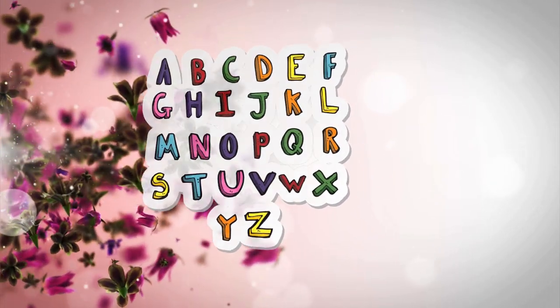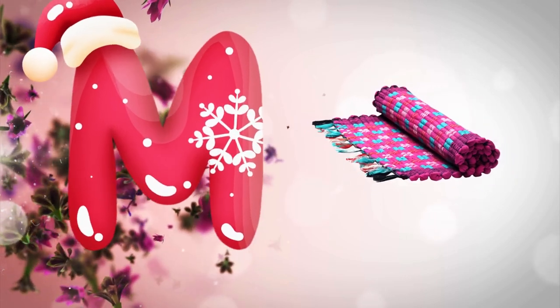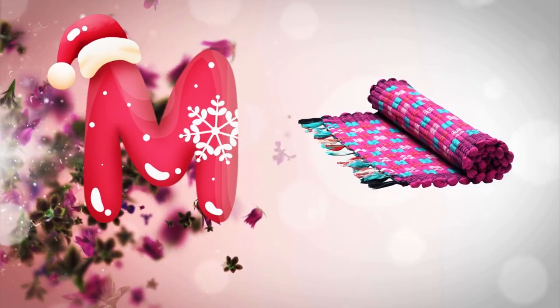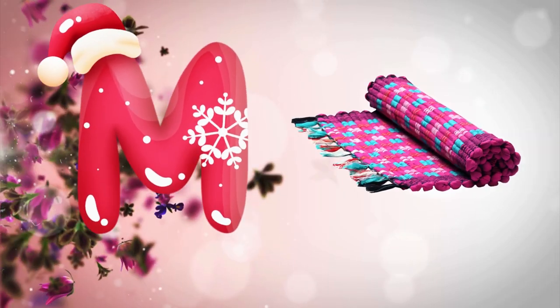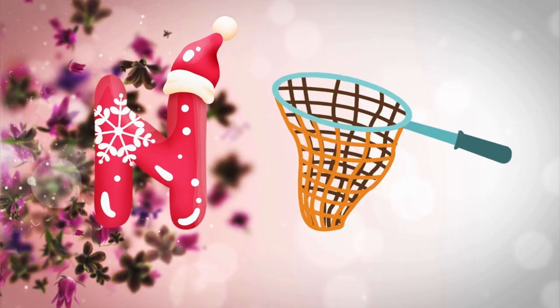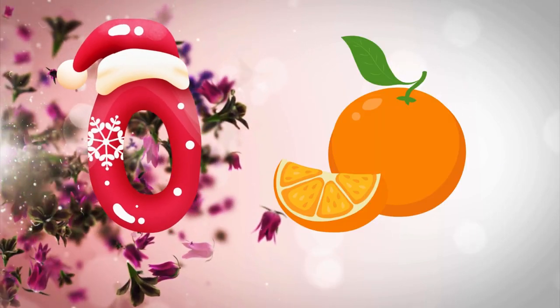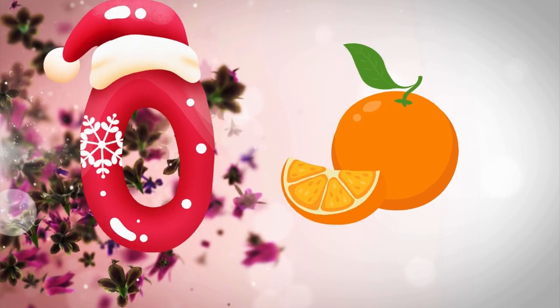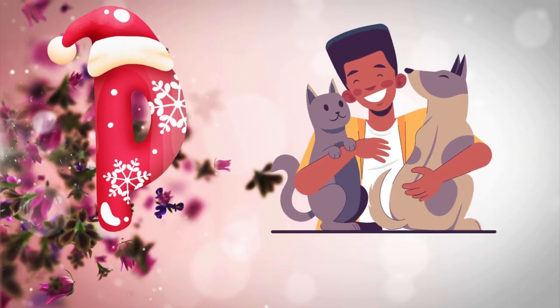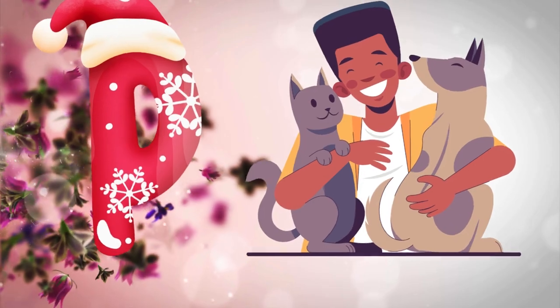M is for mat, m-m-mat. N is for net, n-n-net. O is for orange, o-o-orange. P is for pet, p-p-pet.